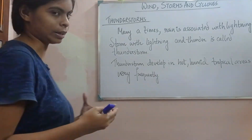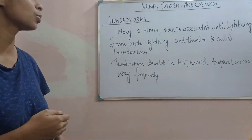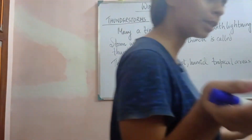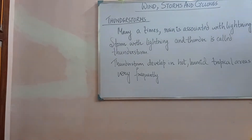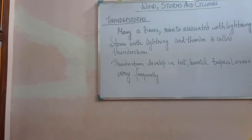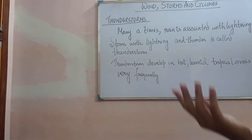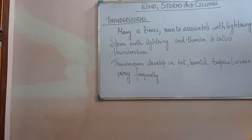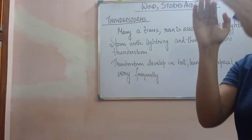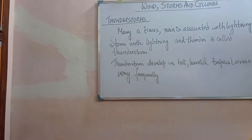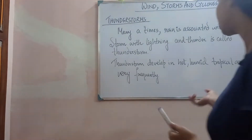Whenever rain is happening, it is associated with lightning. Most of us have noticed that rain is associated with lightning and thunder. Rain with lightning and thunder is called a thunderstorm. In Bengali we call it 'jhaar brishti'. These things all happening together — that is called a thunderstorm. The thunderstorm develops in hot humid tropical areas very frequently.